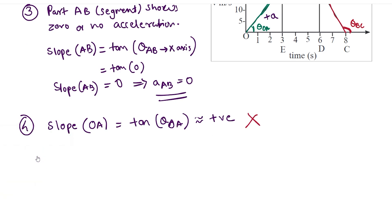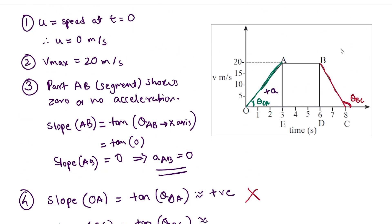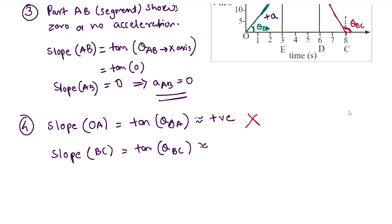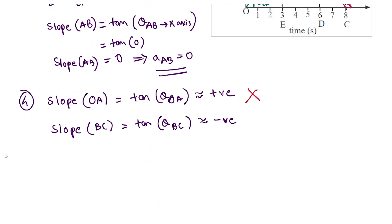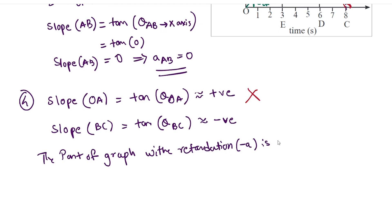Moving to the region between B and C, the angle theta-BC is between 90 and 180 degrees. For this range, tan is always negative, which means the acceleration in this region is negative. That is exactly what we were looking for, so the part of the graph showing retardation — negative acceleration — is part BC.